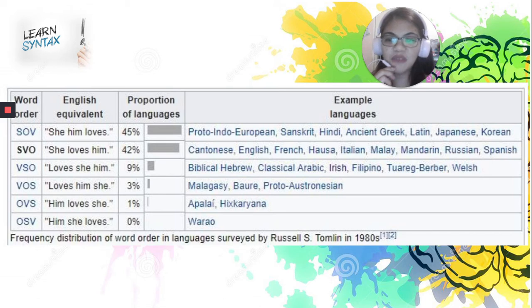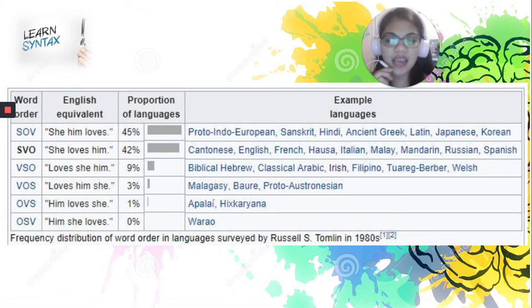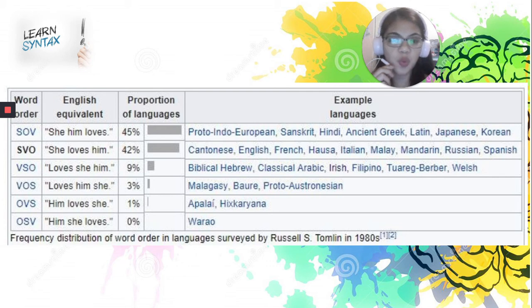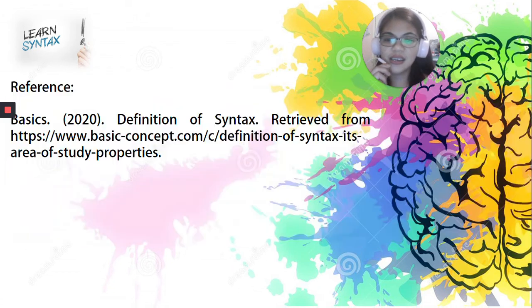The same with the VOS, or verb, object, subject, through the example: loves him, she. The same with the OVS, or object, verb, subject, through the example: him, loves, she. And then the same for the OSV, or object, subject, verb, through the example: him, she, loves. Again, the majority of such examples may be ungrammatical if you are using the English language, but for the languages which follow such word orders, they are grammatically and syntactically correct.